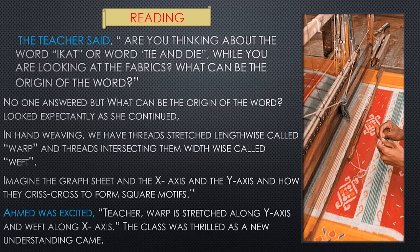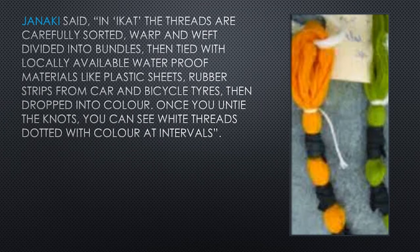Ahmed was excited. 'Teacher, what is stretched along the y-axis when wrapped around the x-axis?' The class was thrilled as a new understanding came. Janaki said, 'In ikat, the threads are carefully sorted — warp and weft divided into bundles — then tied with locally available waterproof materials like plastic sheets, rubber strips from car and bicycle tires, then dipped into color.'